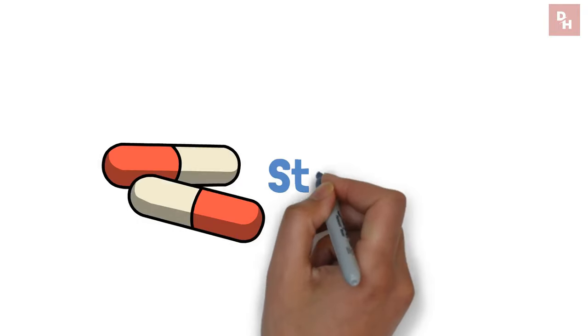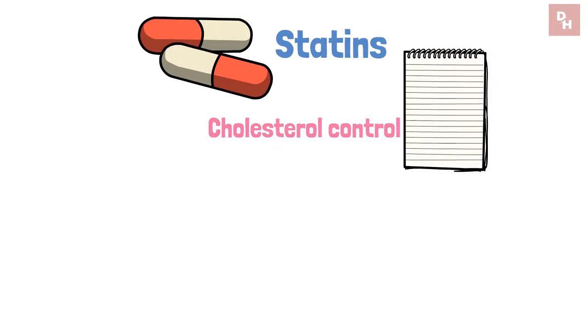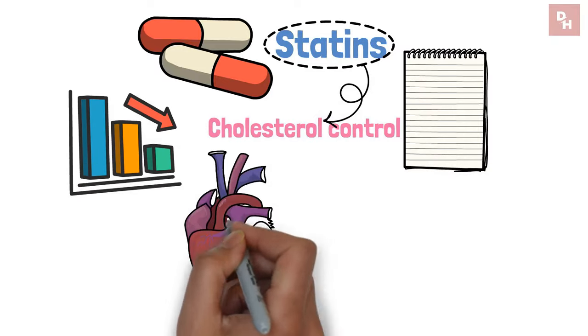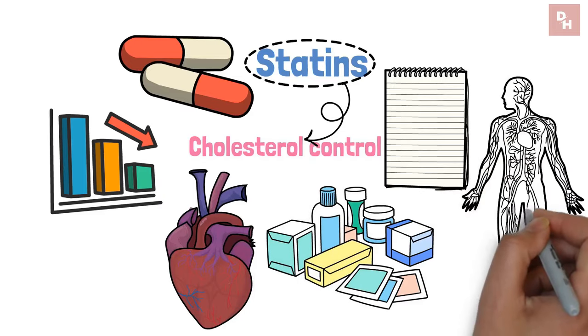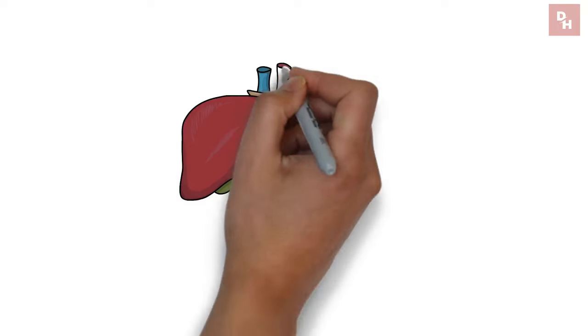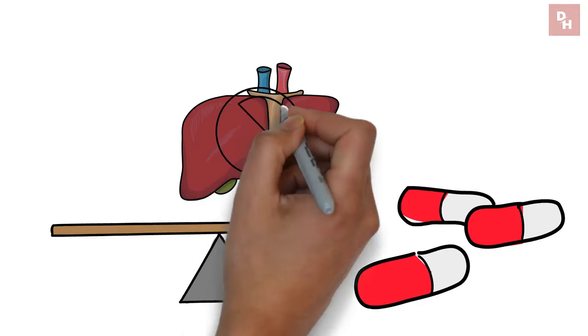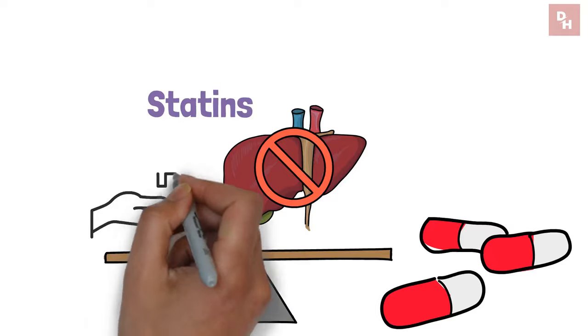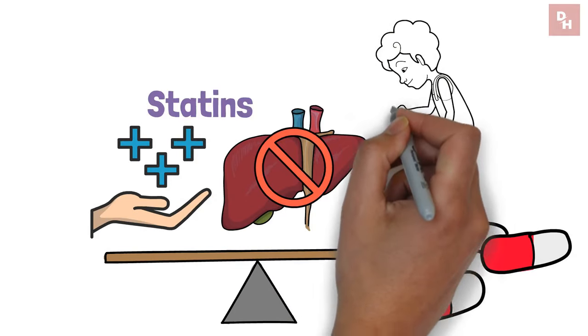Pill number six, statins. Cholesterol control with a cautionary note. Statins stand at the forefront of our arsenal against high cholesterol, significantly reducing the risk of heart disease for many. Yet, in the complex interplay of medication and body chemistry, the liver emerges as a silent stakeholder, processing these powerful drugs and occasionally feeling the strain. While statins are celebrated for their life-saving benefits, it's essential to keep an eye on their impact on liver health.